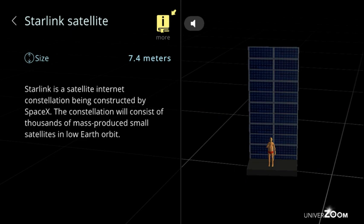Starlink satellite, size: 7.4 meters. Starlink is a satellite internet constellation being constructed by SpaceX. The constellation will consist of thousands of mass-produced small satellites in low Earth orbit.